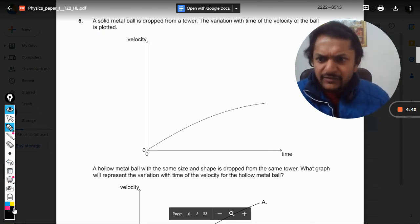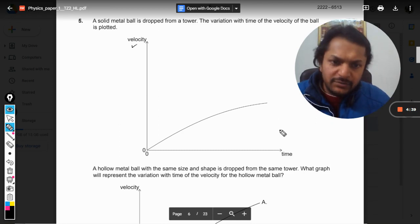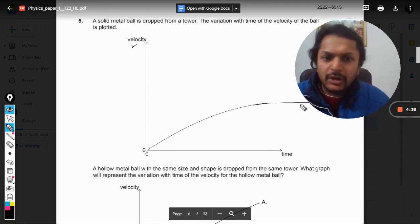This is the velocity of the ball, and obviously after some time it is going to become constant. We all know that this particular velocity is known as vt, that is terminal velocity.